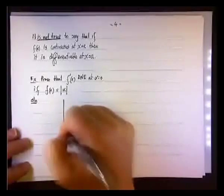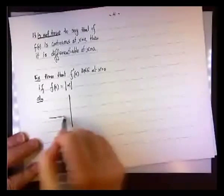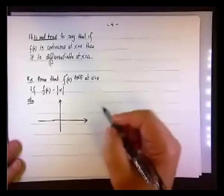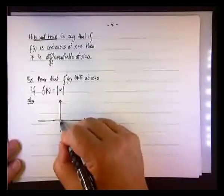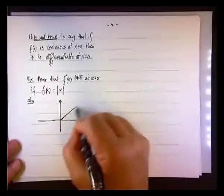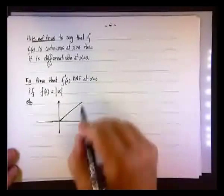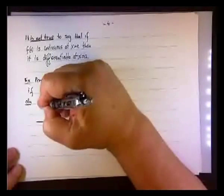So let's look at the function, the absolute value function. And if you remember, the absolute value function on the right side, if x is positive or x equals 0, then we have y equal x.